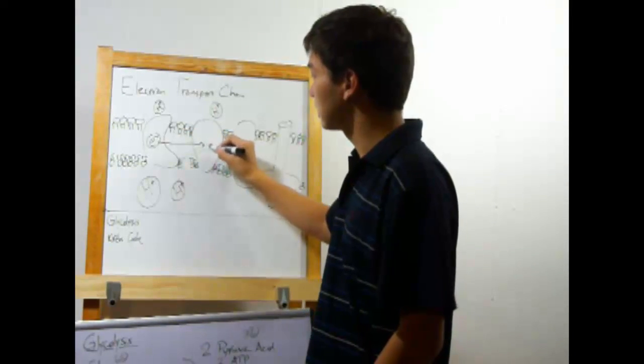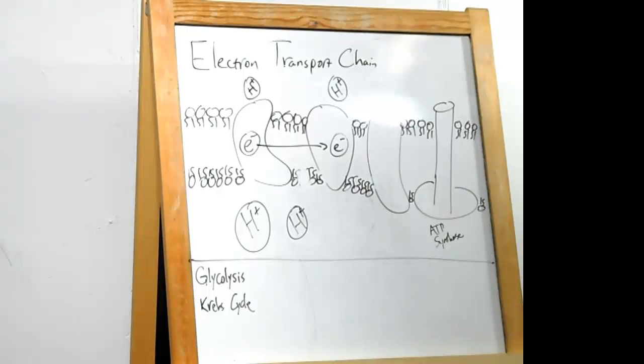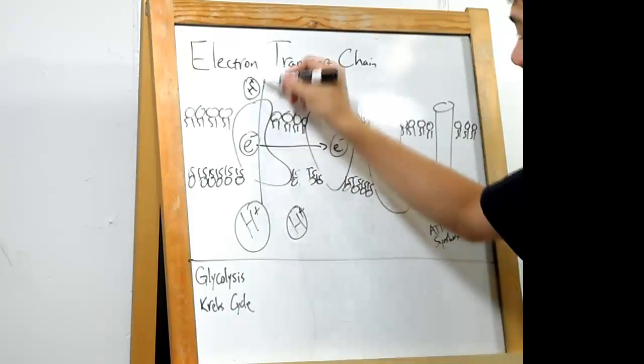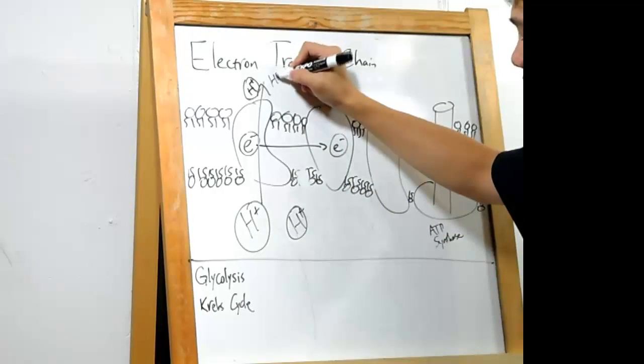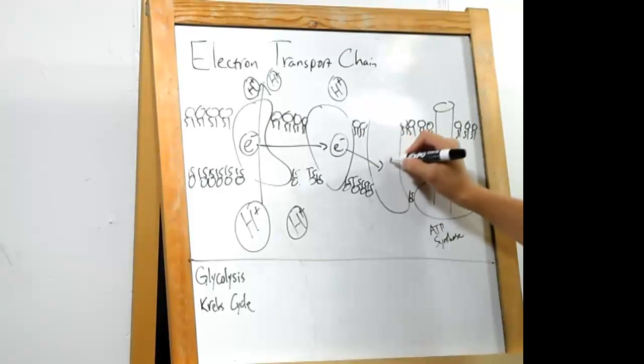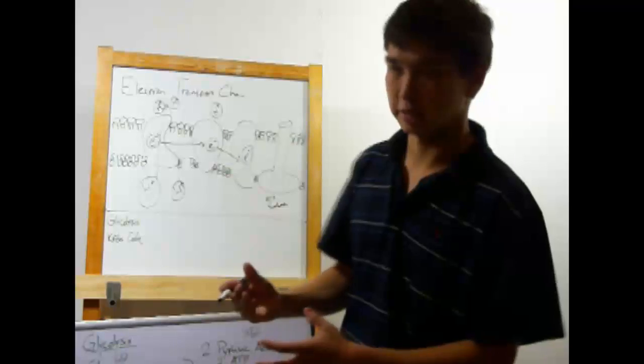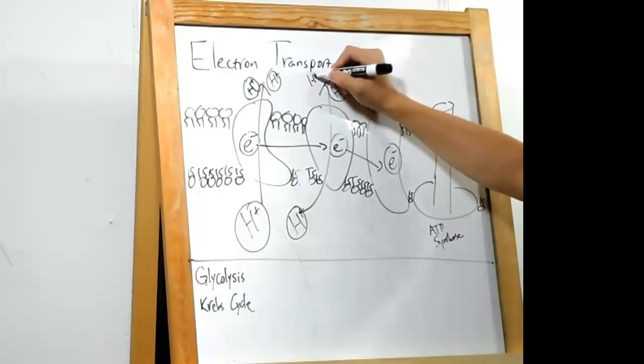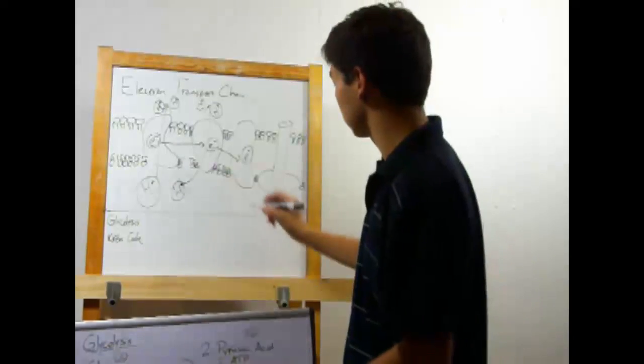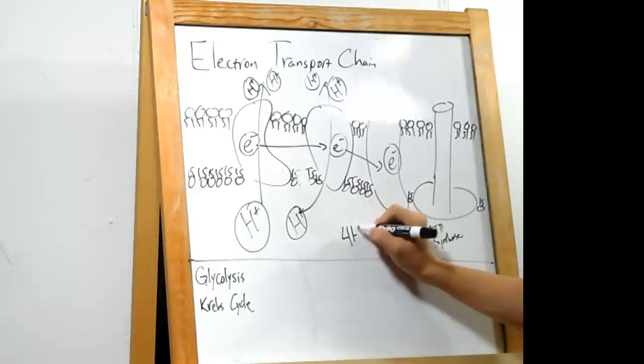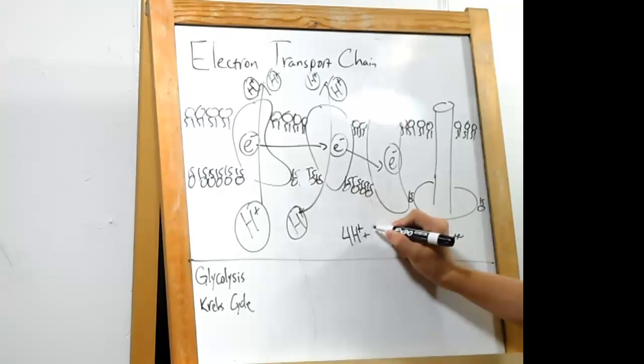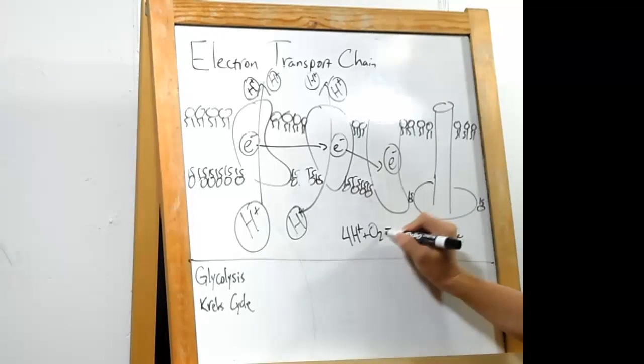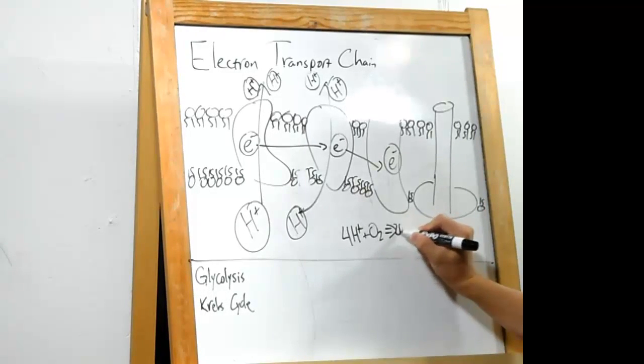The electron is then moved on to the next protein, which releases energy and causes H plus to diffuse across. This will happen again and again. The electron transport chain is much longer than just three proteins. And every time, H plus will diffuse across. At the very end of the electron transport chain, the electron will meet up with four H pluses and an O2 to create two H2O molecules.